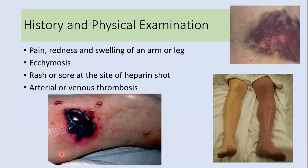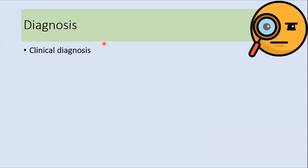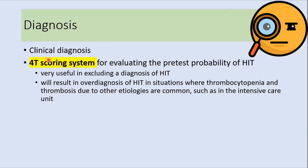On examination, patients can present with ecchymosis, rashes at the site of heparin injection, or swelling of the arms and legs, which are features of arterial and venous thrombosis. Diagnosis is essentially clinical, requiring vigilance when treating any patient with heparin. In addition to clinical suspicion, the 4T scoring system can be used to determine the pre-test probability of HIT. This is a very useful score that helps exclude the diagnosis, though it can lead to over-diagnosis in settings where thrombocytopenia and thrombosis from other etiologies are common, such as in intensive care units.